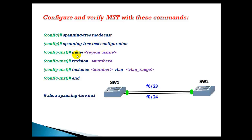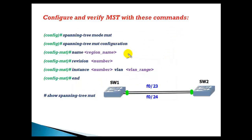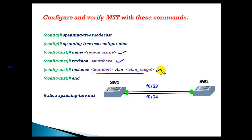In MST configuration we define the region name and the revision number. The revision number is a locally significant number that signifies a revision for MSTP configurations. To ensure proper synchronization, three things must match across switches: the region name, the revision number, and the VLAN-to-instance mappings. A mismatch will affect MSTP convergence.